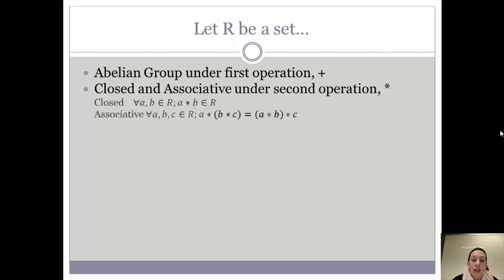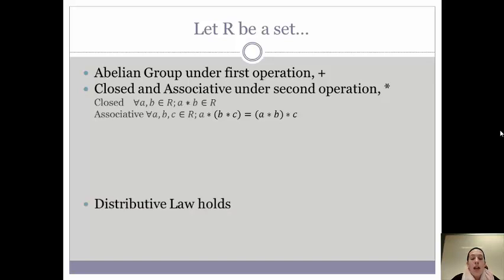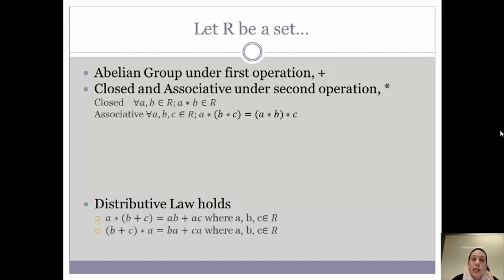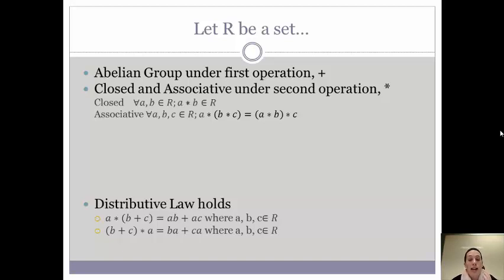Closure and associativity look much like they did on the previous slide, except that this time we are multiplying instead of adding our elements together. And the last thing we need in order to be a ring is for the distributive law to hold. So we need A times the quantity B plus C to be able to distribute that A to be A times B plus A times C for all elements in our set, and we also need it to hold on the right side as well.